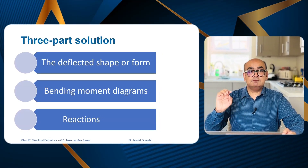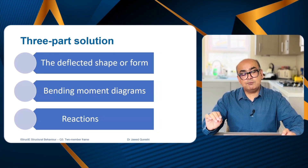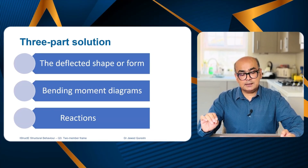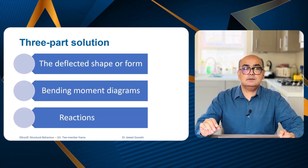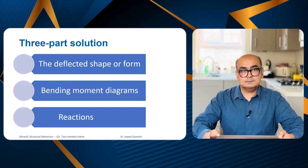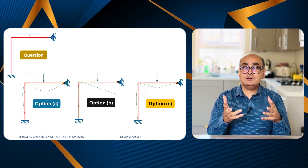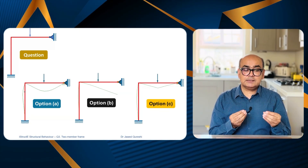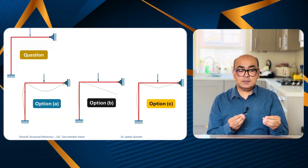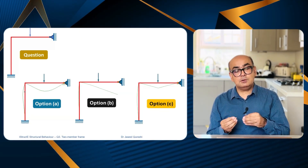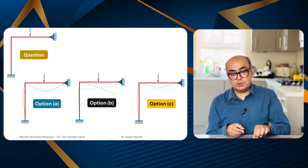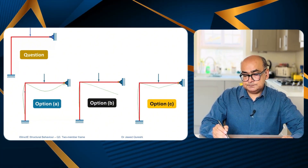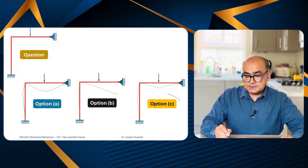I will be solving this question and three more cases with a three-part solution: the deflected shape, the bending moment diagram, and the reactions. After you have taken the quiz, what is your opinion — is the deflected shape the first one, the second one, or the third one? I will start with option C.